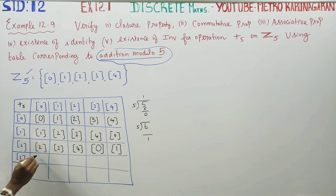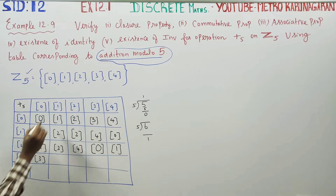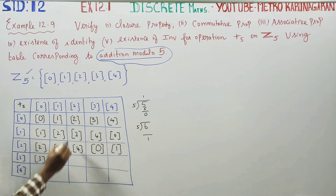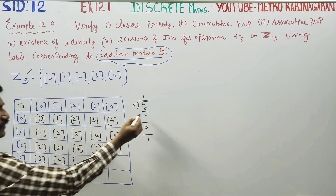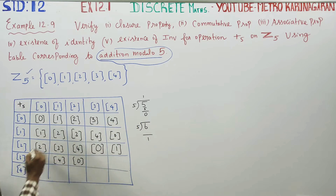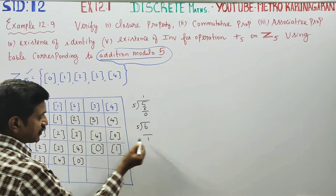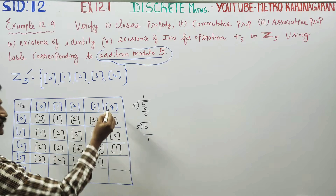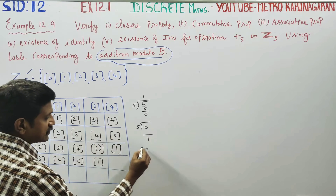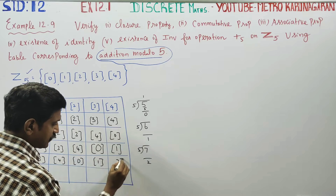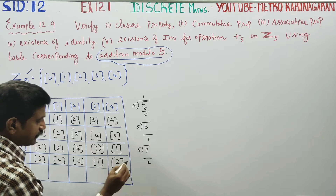Row 3: 3 plus 0 is 3; 3 plus 1 is 4; 3 plus 2 is 5, remainder 0; 3 plus 3 is 6, remainder 1; 3 plus 4 is 7, and 7 mod 5 gives remainder 2.